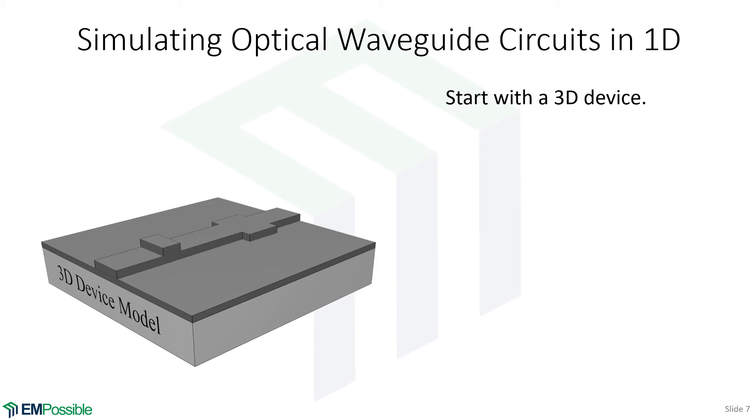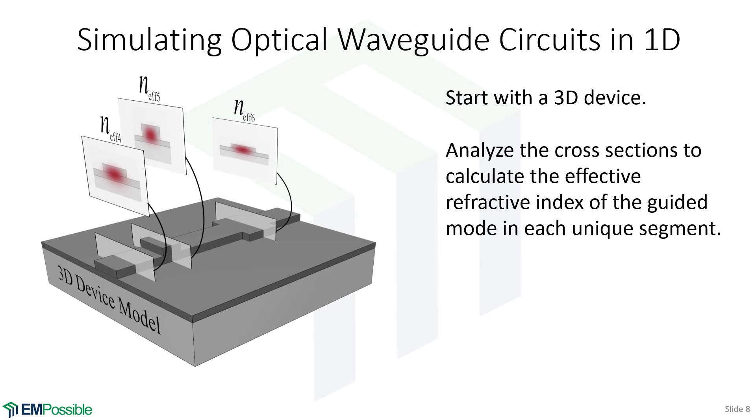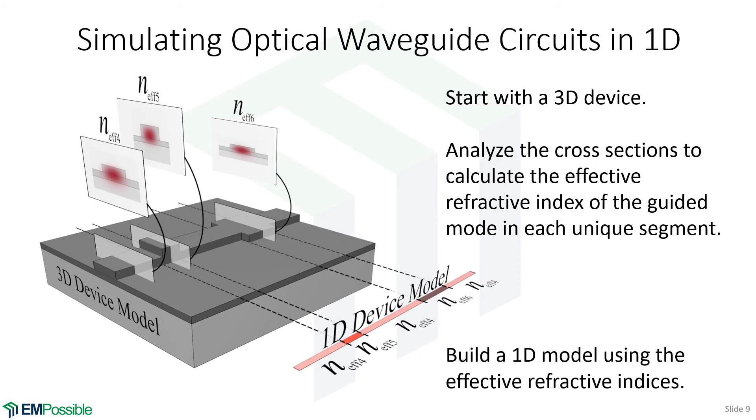Here's another example that comes from optics. Here's an integrated optical waveguide, which has some interesting structure to it. And so what we can do is we can look at cross-sections of that waveguide, analyze those as two-dimensional problems, figure out what mode propagates in that section, and figure out its effective refractive index.